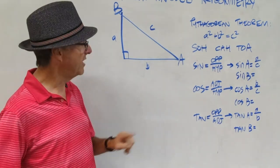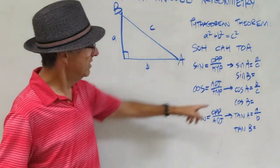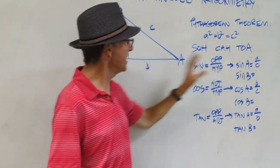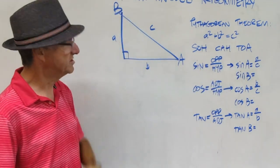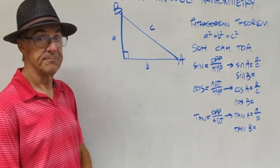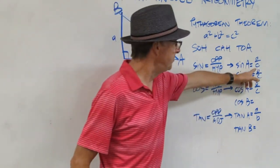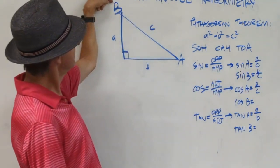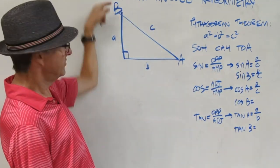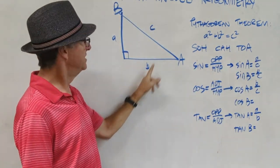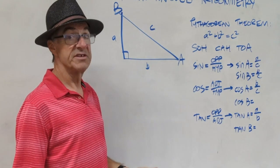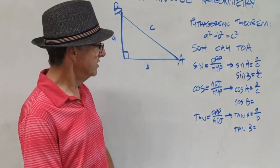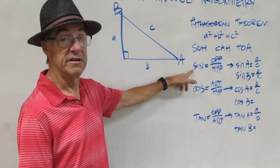What I want you to do now is pause the video and write down the ratio for sine B. Sine B is just B over C, because now our angle is up there, so B is the opposite side. C is always the hypotenuse. So that is the ratio of sine.